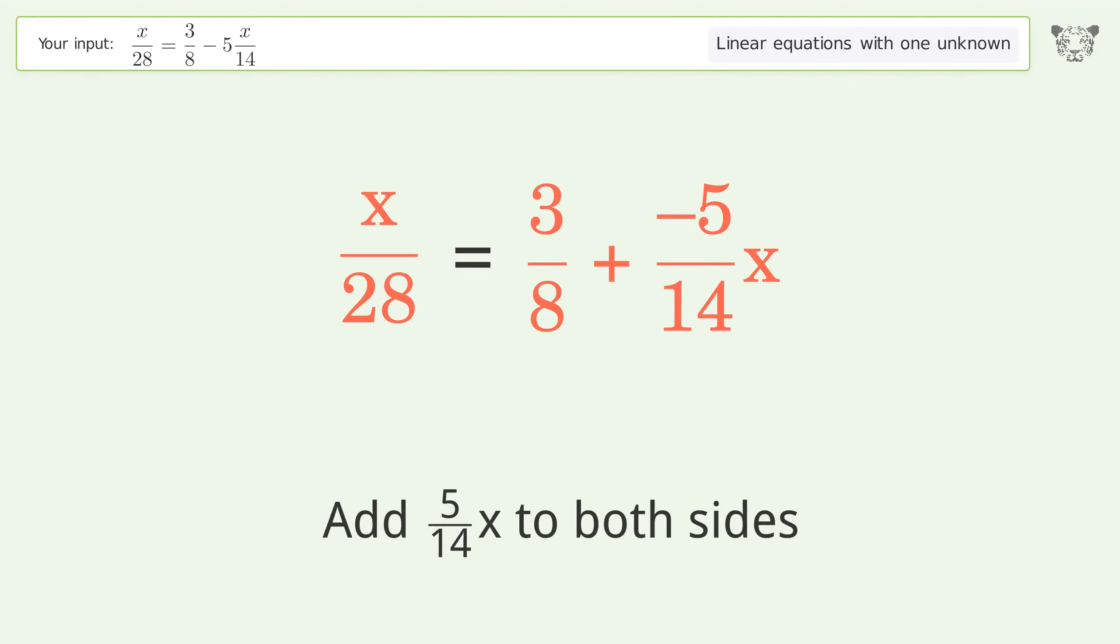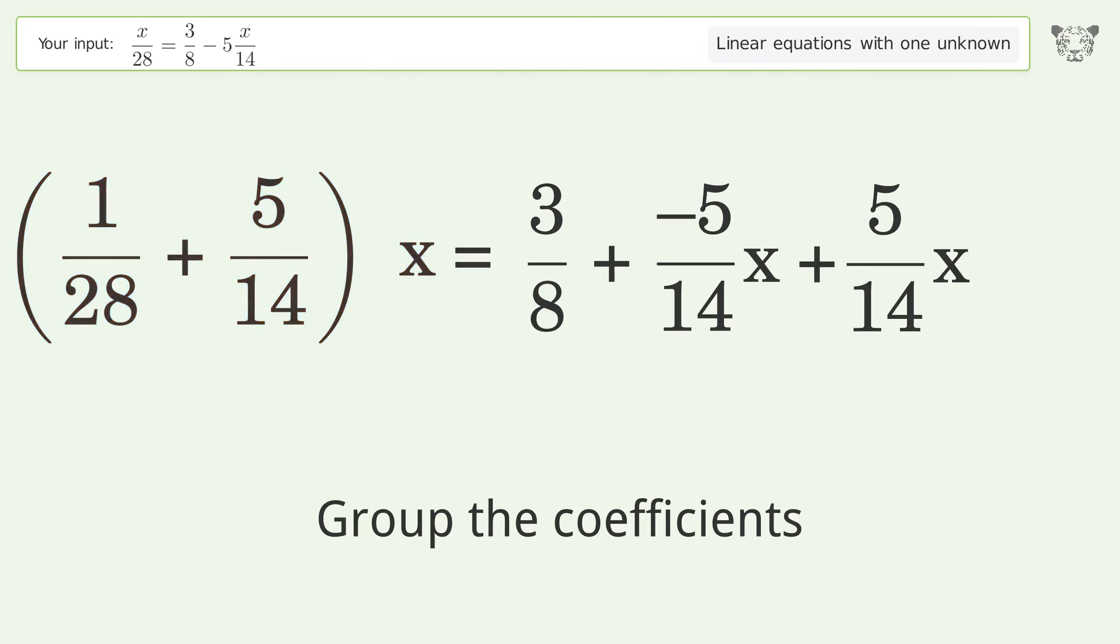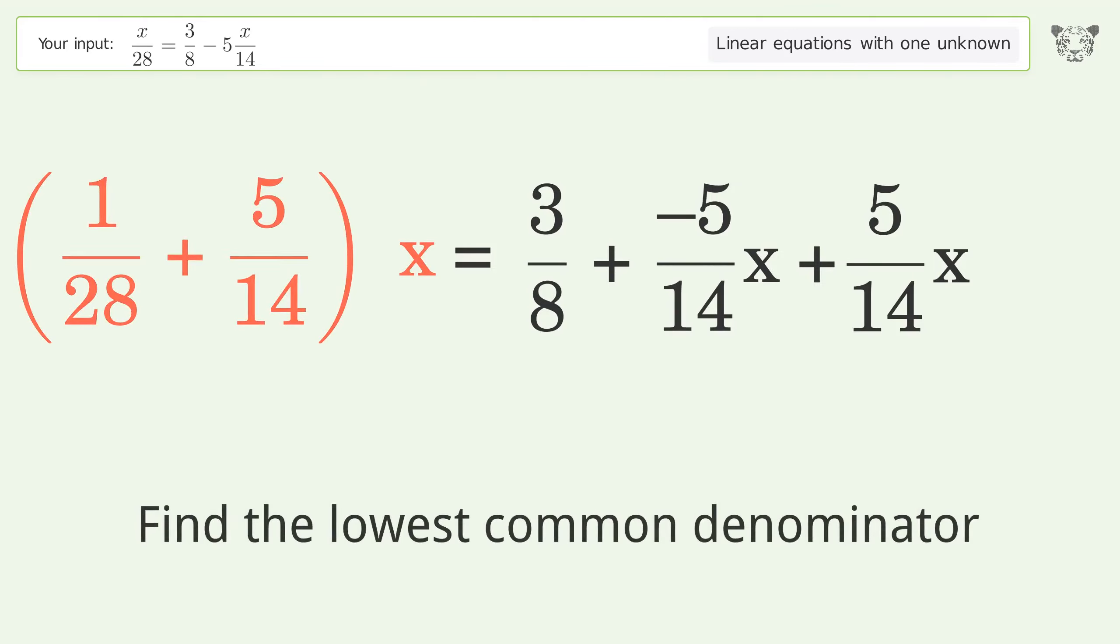5 over 14 x to both sides. Group the coefficients. Find the lowest common denominator.